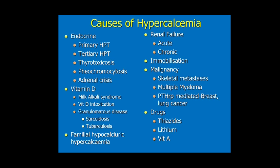Causes of hypercalcemia include endocrine causes such as primary hyperparathyroidism, tertiary hyperparathyroidism, thyrotoxicosis, pheochromocytoma, and adrenal crisis. Vitamin D-related causes include milk-alkali syndrome and vitamin D intoxication. Granulomatous diseases like sarcoidosis and tuberculosis, and a familial condition known as familial hypocalciuric hypercalcemia are also causes. Renal failure (acute and chronic), immobilization, and malignancies such as bone metastasis, multiple myeloma, and PTHrP-secreting cancers like breast and lung cancer can cause hypercalcemia. Drugs like thiazides, lithium, and vitamin A are also implicated.